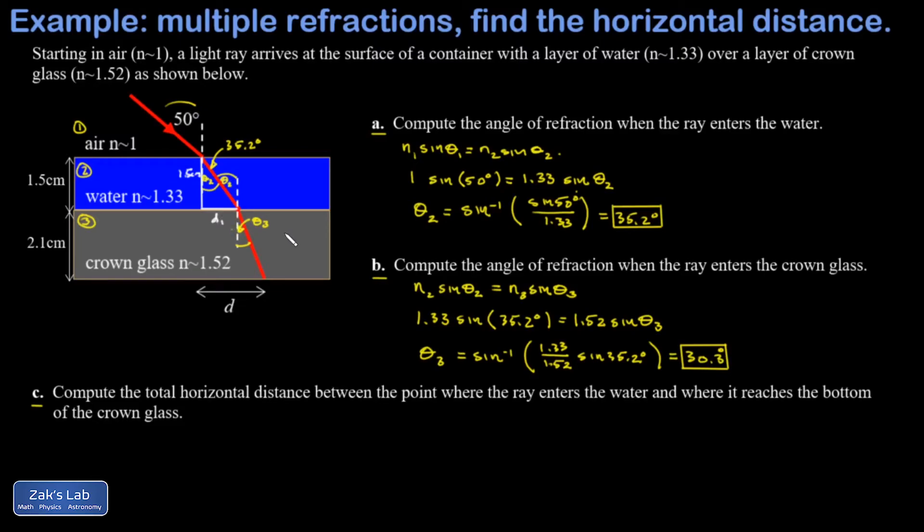The key to that is using the tangent function. The tangent is the opposite over the adjacent, and we can quickly solve that for d1 just by multiplying by 1.5. I get a horizontal displacement of 1.06 centimeters.